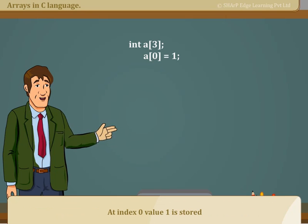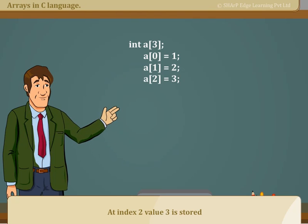At index 0, value 1 is stored. At index 1, value 2 is stored. At index 2, value 3 is stored.